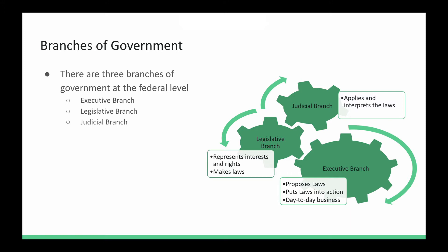The executive branch typically proposes new laws, puts those laws into action, and runs the day-to-day business of government through various ministries or departments. The legislative branch represents the interests and rights of all Canadians, works with the executive branch, and makes laws. The judicial branch applies and interprets the laws.